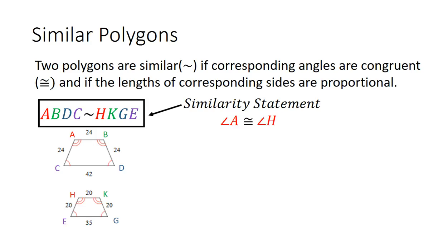Angle A is going to be congruent to angle H. I have them both in red to distinguish them. On the polygons themselves, angle A has two arcs and so does angle H, which tells us they are congruent. Notice where they're located in the similarity statement — A is first and H is first, so angle A is congruent to angle H.